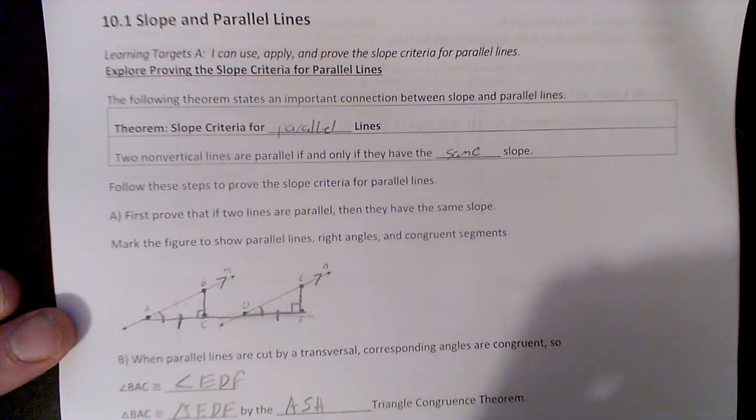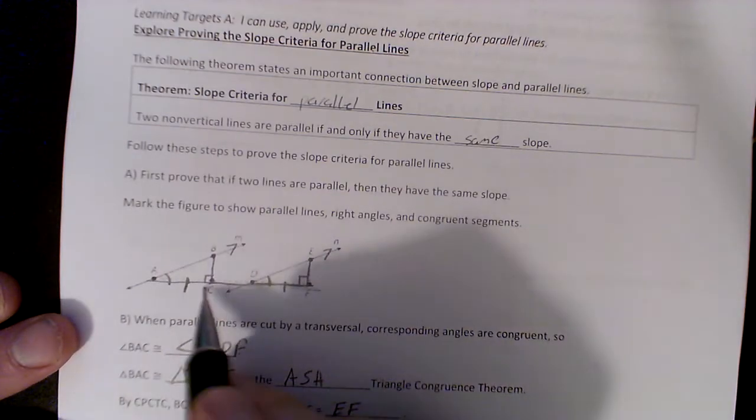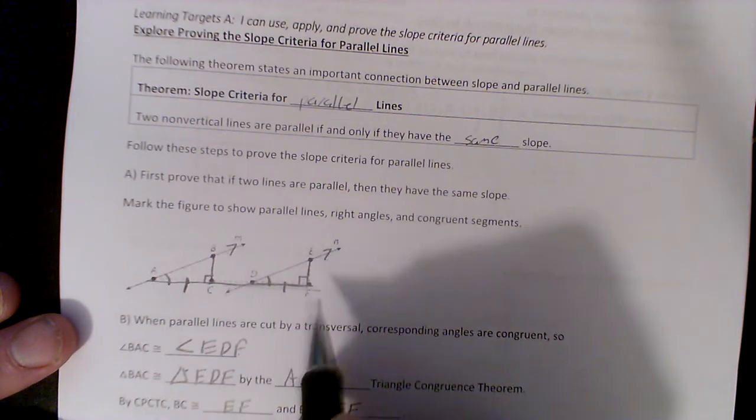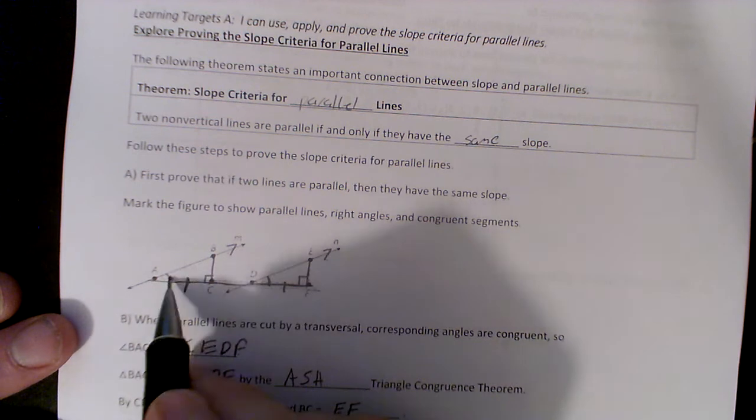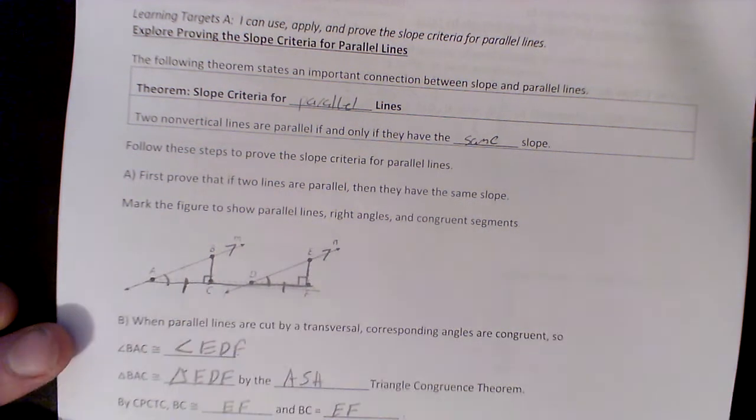Look, bottom right side, bottom right side. That tells us that triangle BAC is congruent to triangle EDF, right? Because angle-side-angle. Both are angle-side-angle.